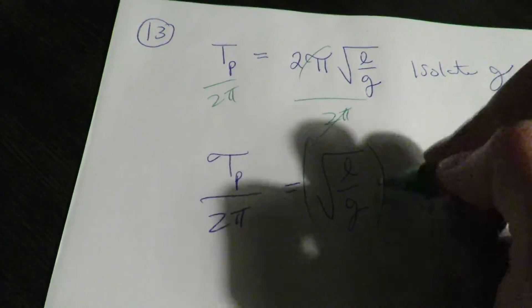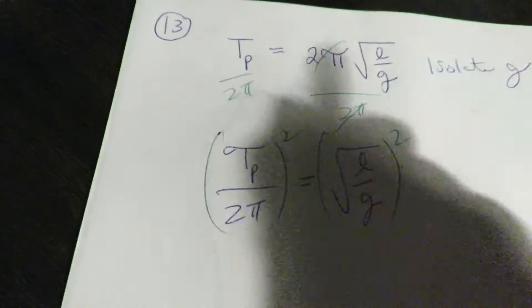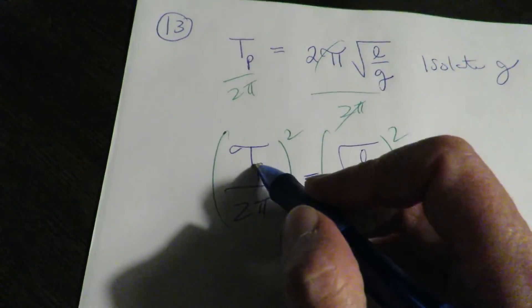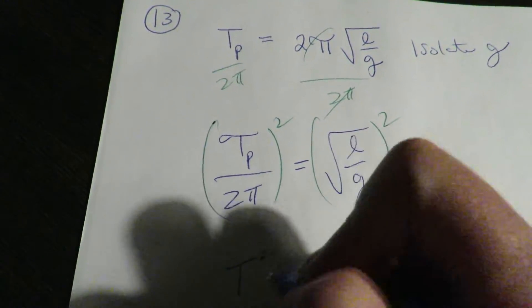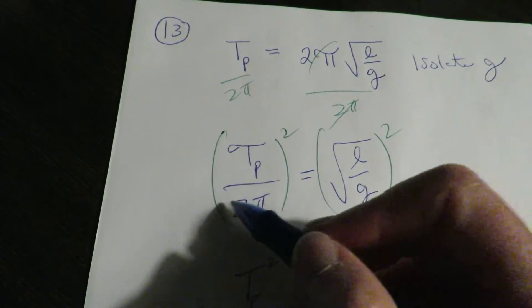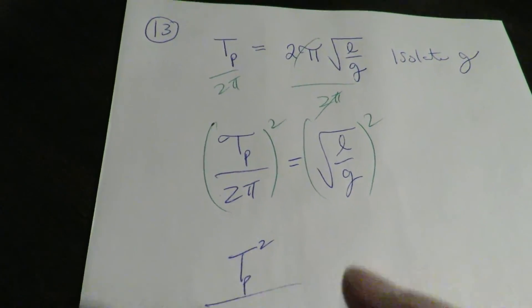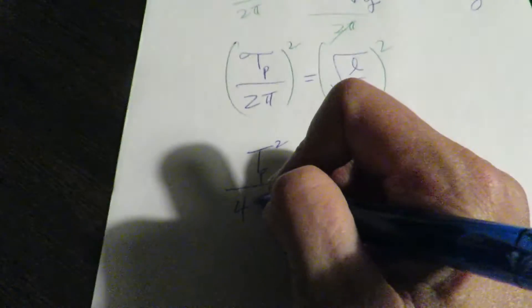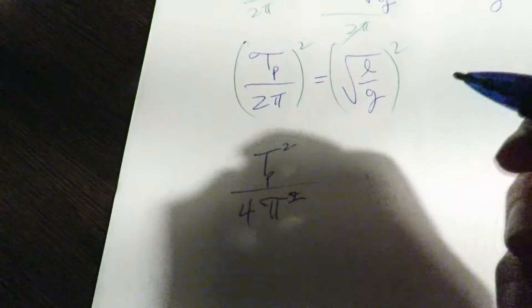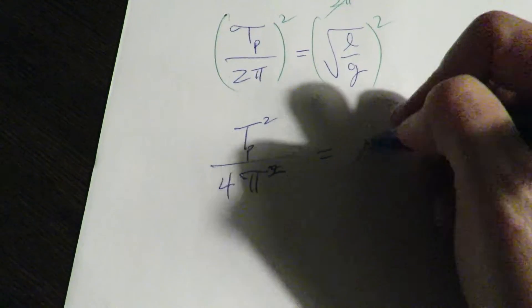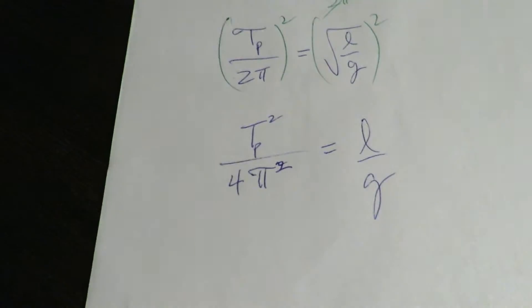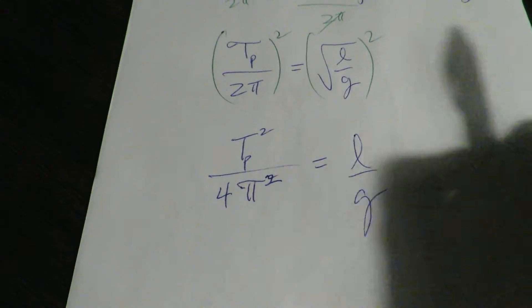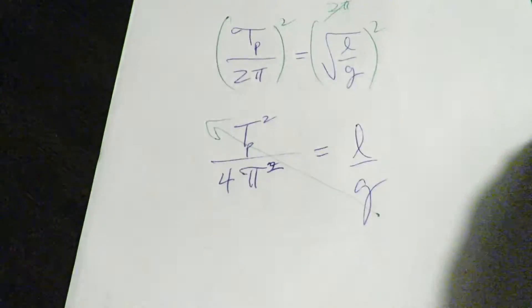Okay, so now let's get rid of the radical, so you're going to square both sides. Two squared is four, pi squared is pi squared. I know that looks really weird. Okay, now you've got to bring the G up to the other side.